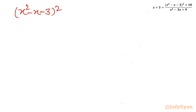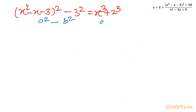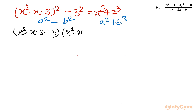Taking 3² to the LHS and 2³ to the RHS, I can write: (x² - x - 3)² - 3² = x³ + 2³. The left hand side is a difference of two squares (a² - b²), and the right hand side is the formula for a³ + b³. Applying both formulas: LHS gives (x² - x - 3 + 3)(x² - x - 3 - 3), and the right hand side gives (x + 2)(x² - 2x + 4).